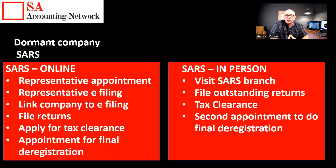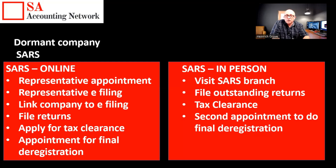The second option, which might be a bit easier, is to visit the SARS branch in person. Take your affidavit, registration documents, ID book, and proof of address. Sit there at the SARS branch and tell the SARS official that you received this notification, that the company never started trading, here's the affidavit — please file all the outstanding returns while you're sitting there and issue you the tax clearance. Once you have that tax clearance certificate, email CIPC to say the company never traded, here's my tax clearance, I want to deregister. Six months later you get your certificate from them, then go back to SARS for a second appointment to do the final deregistration.